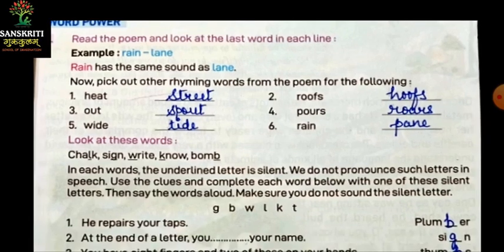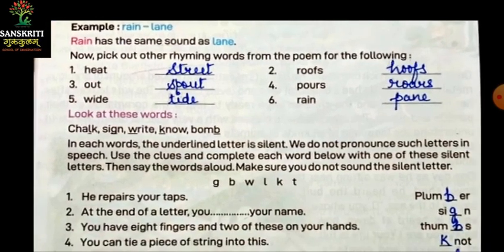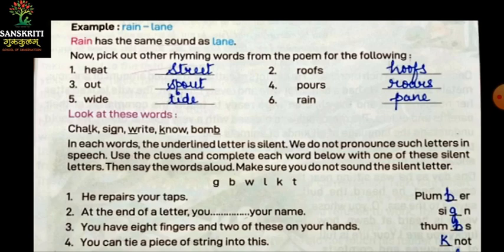Look at these words: chalk, sign, right, no, bomb. In each word, the underlined letter is silent. Dekhi — chalk mein L ka use nahi kiya; sign mein G ka use nahi kiya; right bola toh W ka use nahi kiya; bomb bola hai — bombo nahi bola, bomb bola. Isliye yeh sab words mein jo underlined kiye gaye hai, yeh silent hai. We do not pronounce such letters in speech.